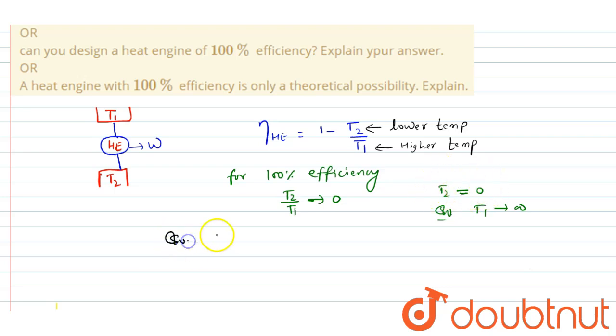By writing down here, absolute 0 temperature is impossible to obtain, also T1 cannot be equal to infinite Kelvin. So from above, we can conclude that 100% efficiency of a heat engine cannot be obtained. So 100% efficiency cannot be achieved.